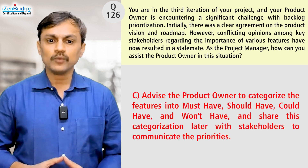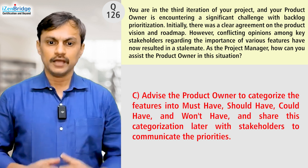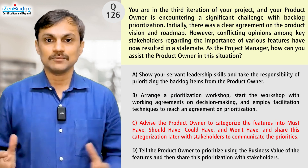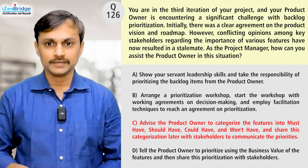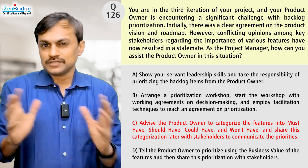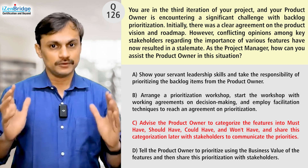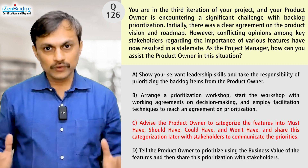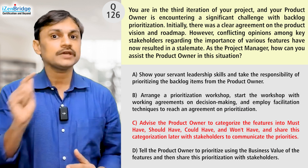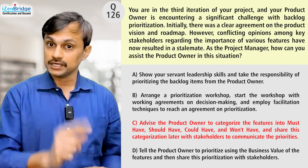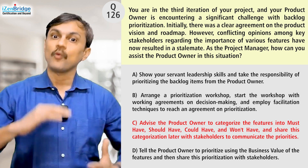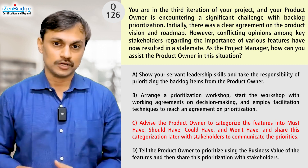Option C: advise the product owner to categorize features into Must Have, Should Have, Could Have, and Won't Have, and share this categorization later with stakeholders to communicate the priorities. Again, it has the keyword MoSCoW and some of you may jump to it. But the problem with this option is it says the product owner will do it and then just share with stakeholders. The question is talking about key stakeholders, and as a project manager, you wouldn't advise the product owner to avoid stakeholder feedback and go with his own judgment. It is lacking stakeholder collaboration and shared understanding. So we avoid option C.